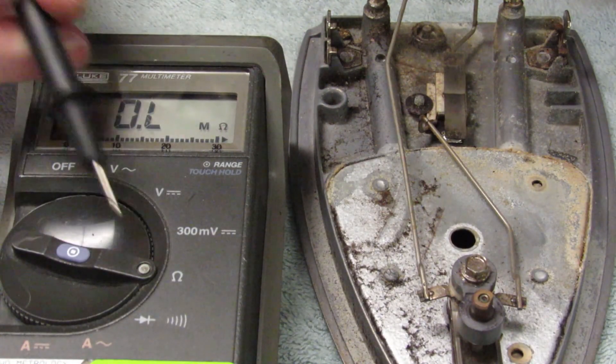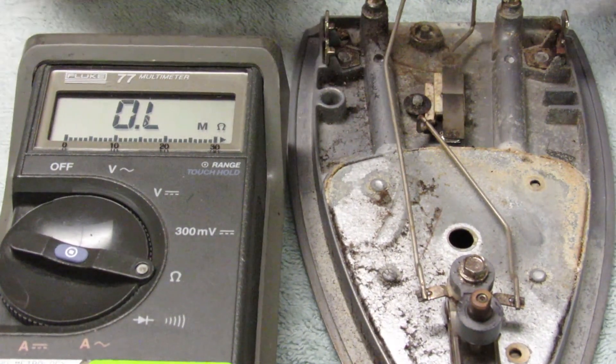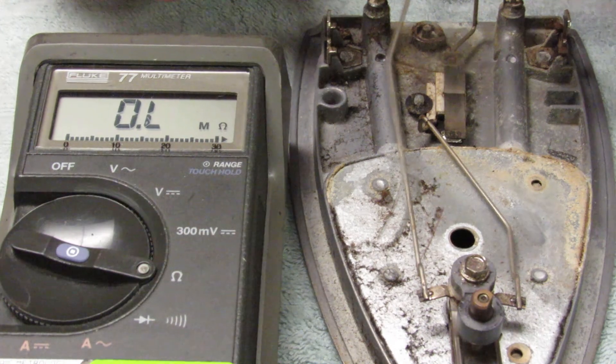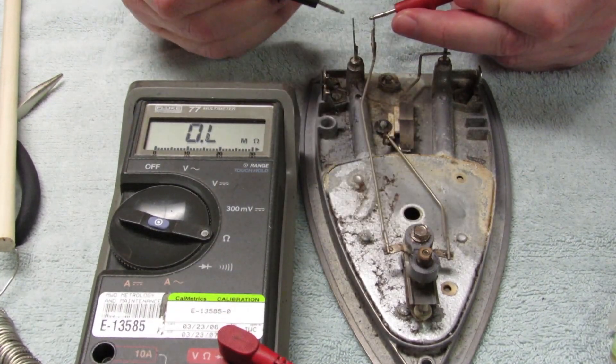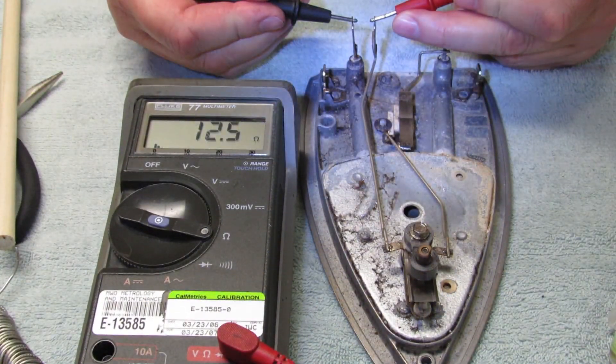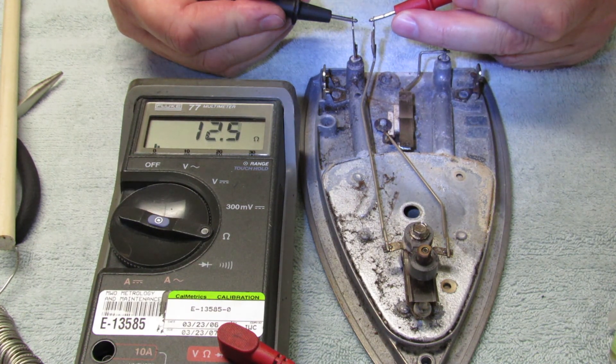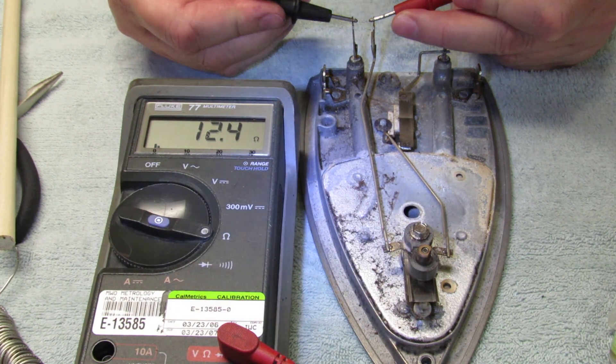So we've put it on ohm scale measuring resistance. And I'm going to use the same two points. Because I want to see if turning that makes any difference in the resistance. So 12.5 there. Aiden can you turn it for us?